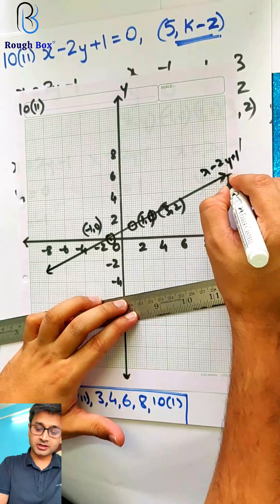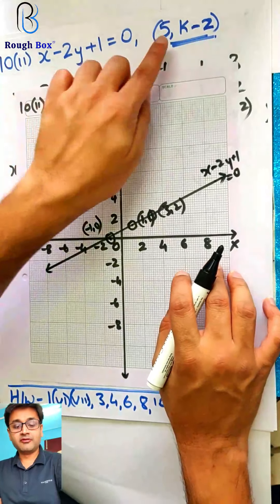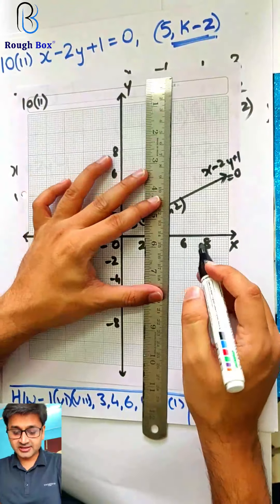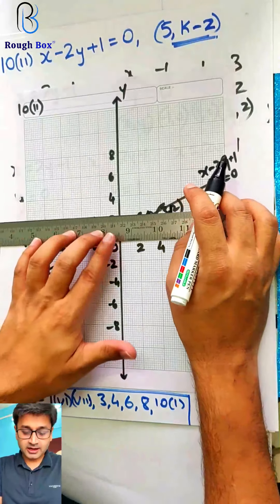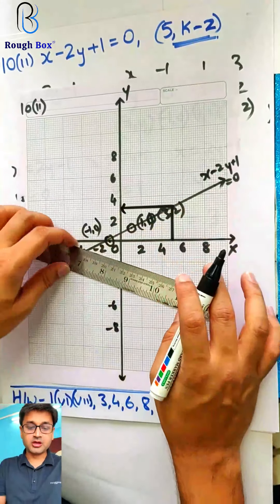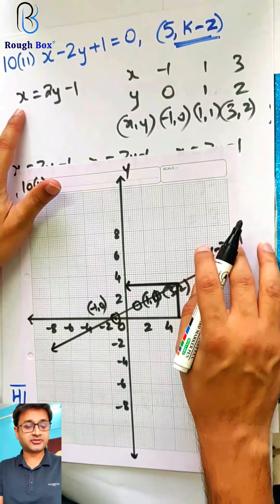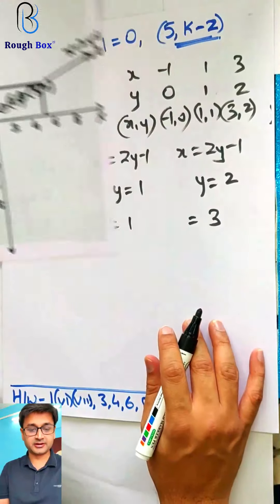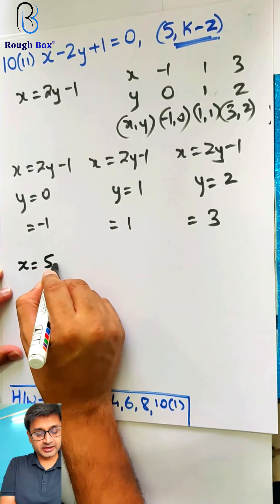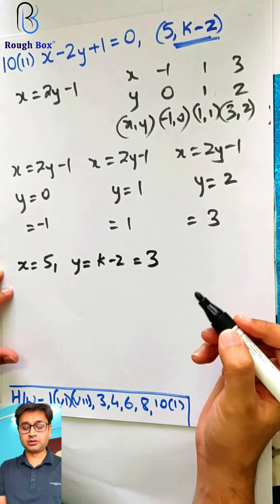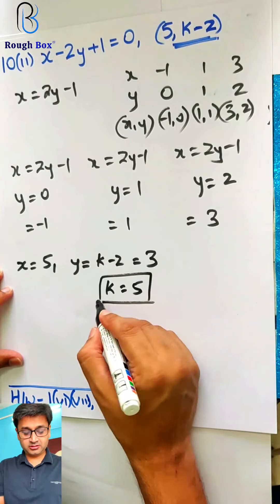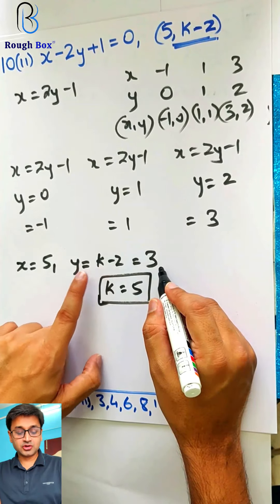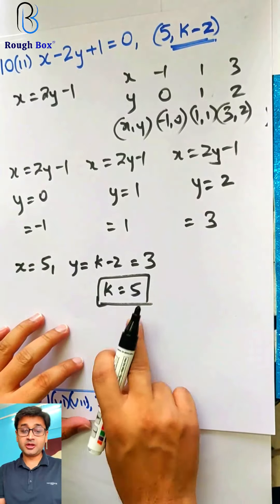Equation: x minus 2y plus 1 equals to 0. Now what do you have to find? x is 5 — what will be y? Use x as 5: 5 plus 1 is 6, divided by 2 gives 3. So y equals 3. How to present it: x equals 5, y equals k minus 2 equals 3. Therefore k equals 5. So y you get first, and then you get k — you don't get k directly. y equals k minus 2 equals 3, therefore k becomes 5. Perfect.